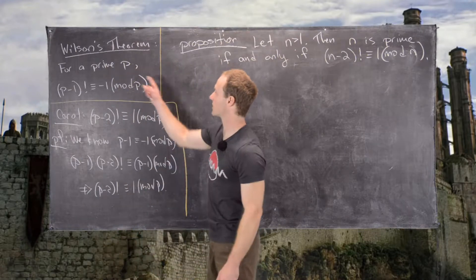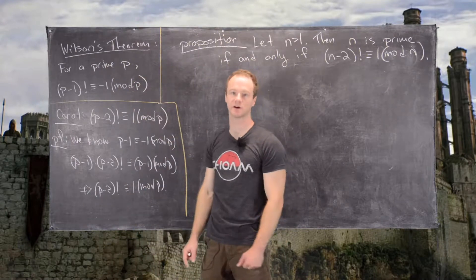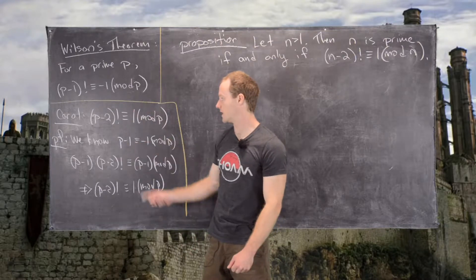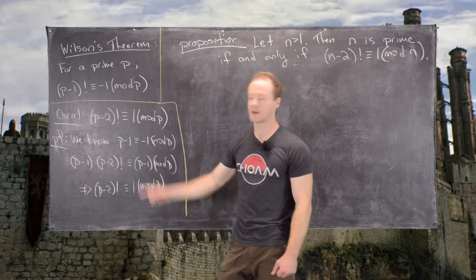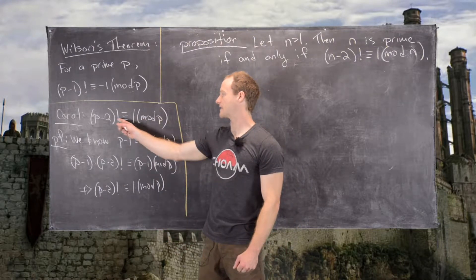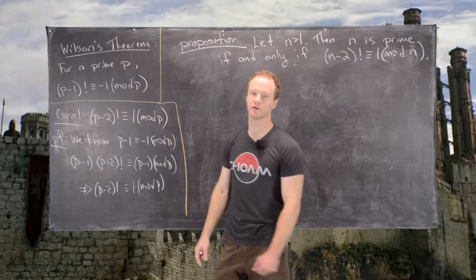Let's recall Wilson's Theorem: for a prime p, (p-1)! is congruent to -1 mod p. It has a corollary which we proved in a previous video, and I've left the proof up here, that (p-2)! is congruent to 1 mod p.